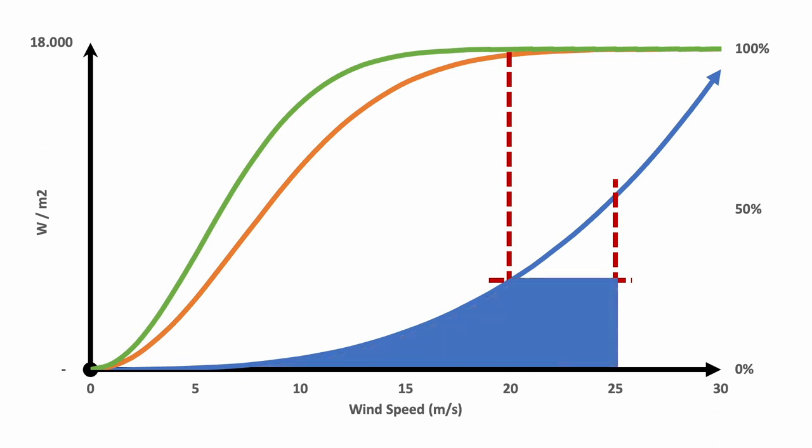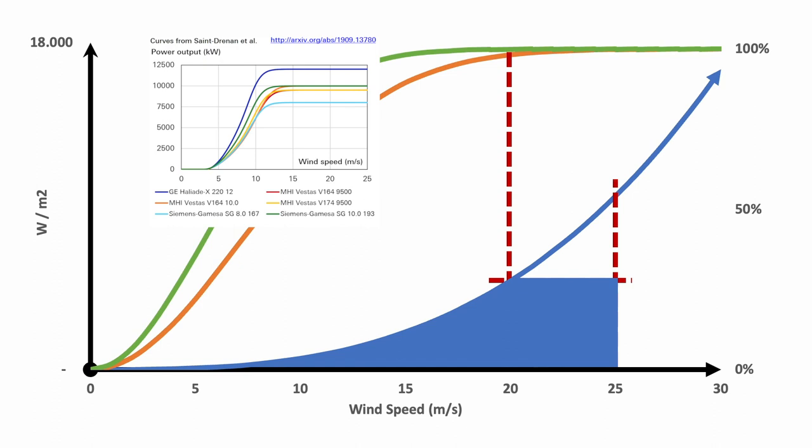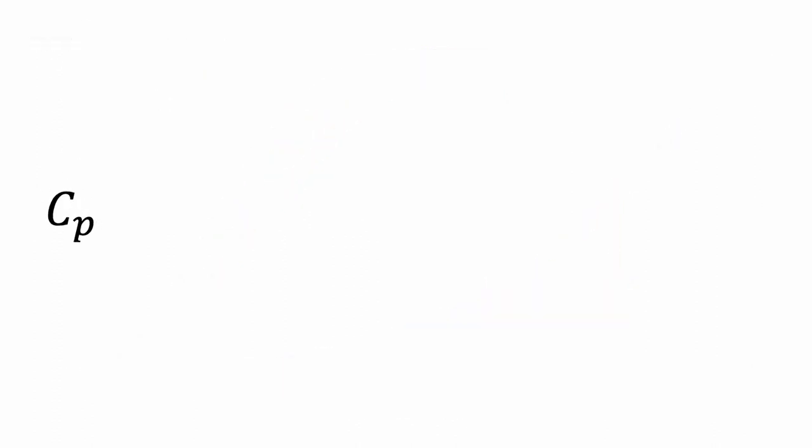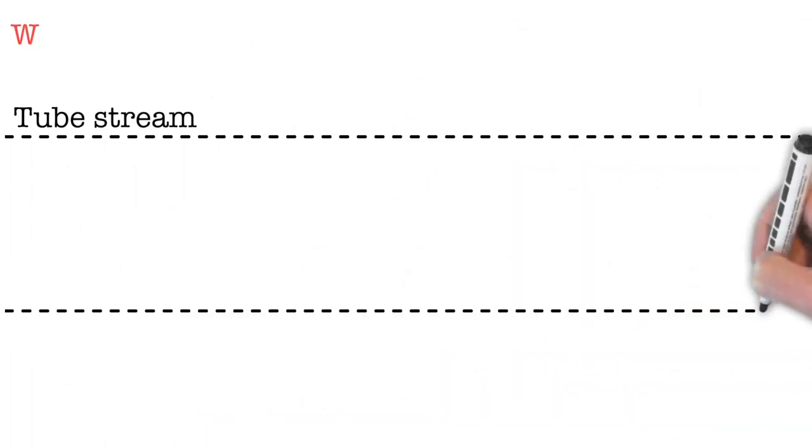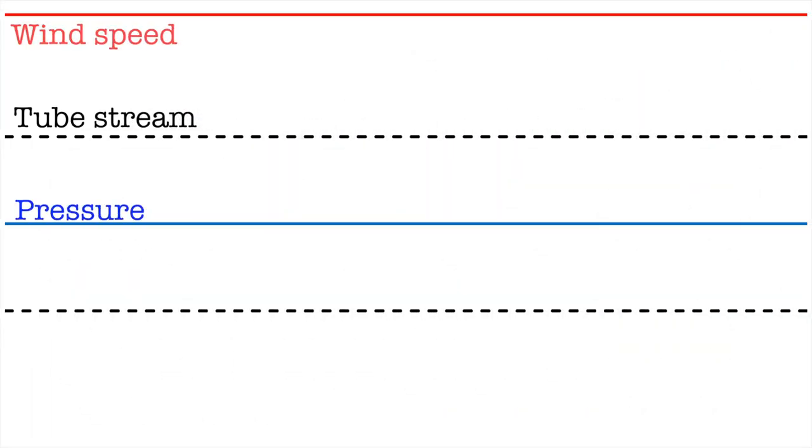The power coefficient defines the relationship between the actual power and the maximum available. What it measures is the effects of the aerodynamic, mechanical, and electrical efficiency of the system. Let's use a stream tube with a given wind speed and pressure.